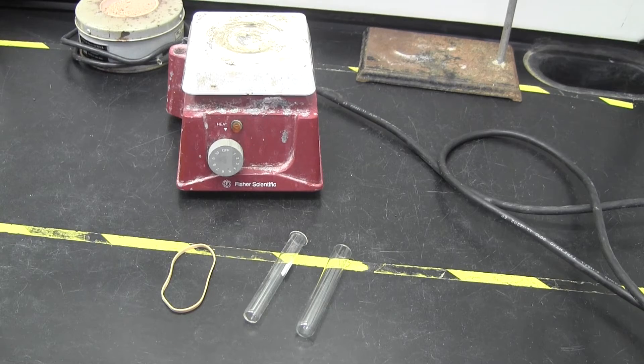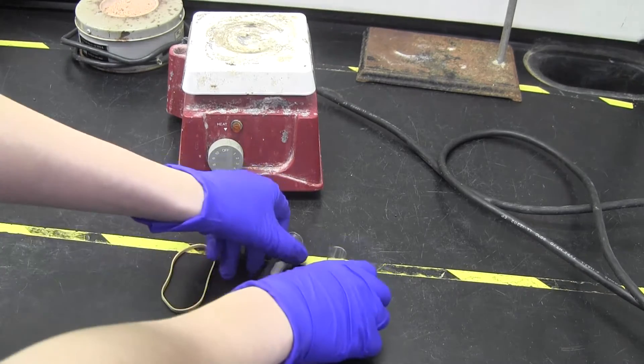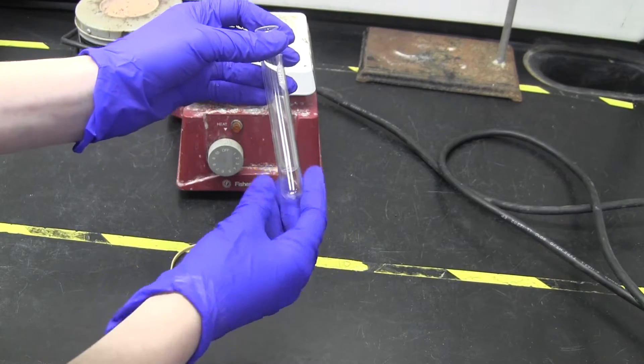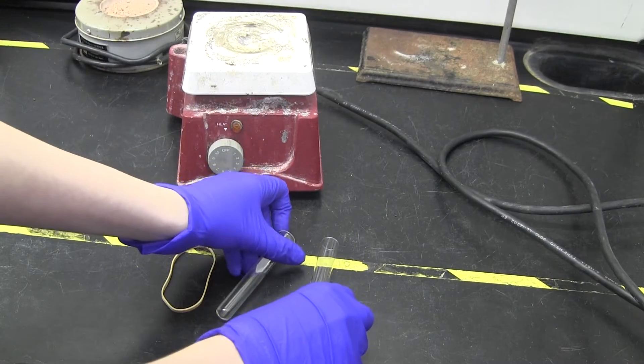First, you will set up the glassware. This is done by finding two test tubes that vary slightly in size. One test tube should be able to fit inside of the other, leaving a small gap.